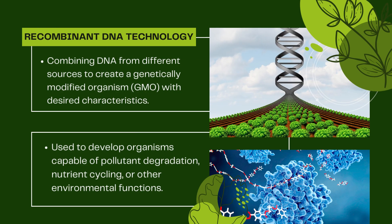Recombinant DNA technology involves the artful combination of DNA from different sources. It's like creating a genetic cocktail with precisely selected ingredients. By mixing and matching DNA, we can develop genetically modified organisms, GMOs, with desired characteristics. In environmental biotechnology, this can lead to organisms capable of pollutant degradation, nutrient cycling, and various other environmental functions.